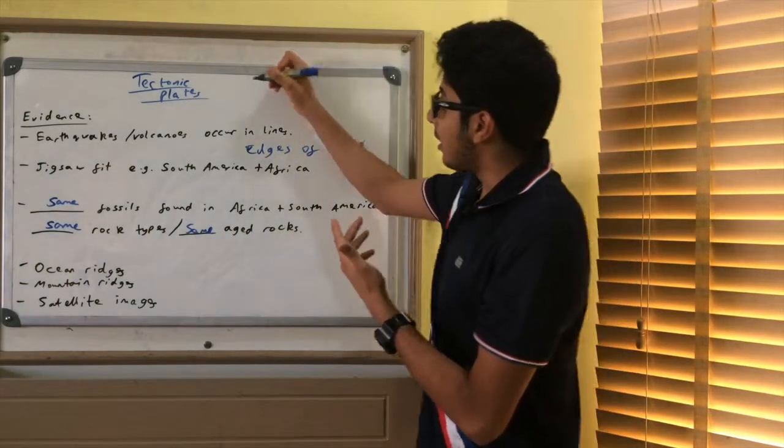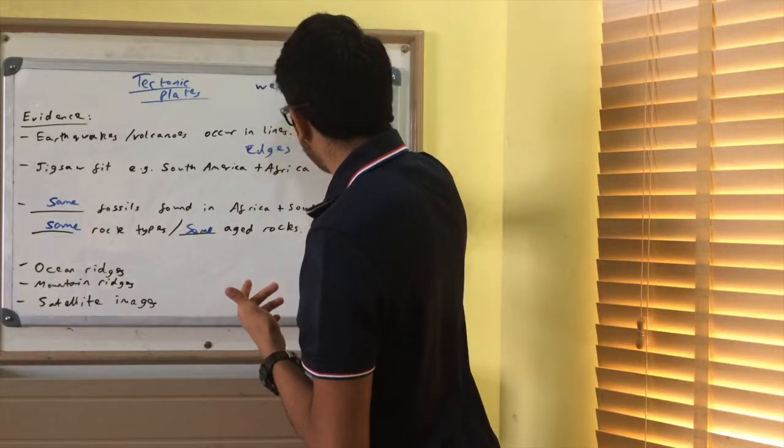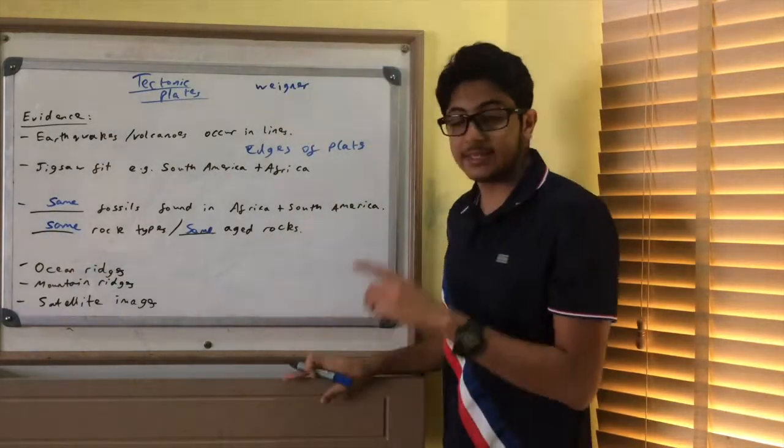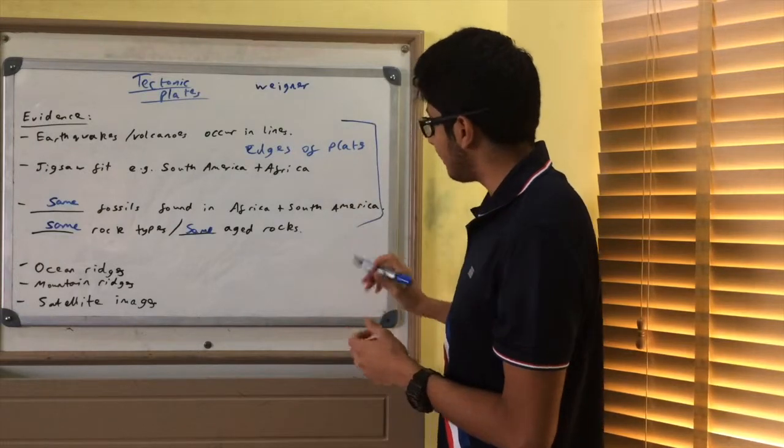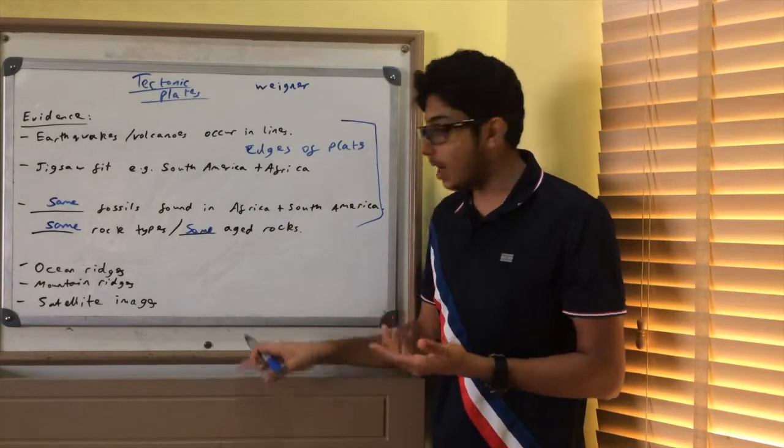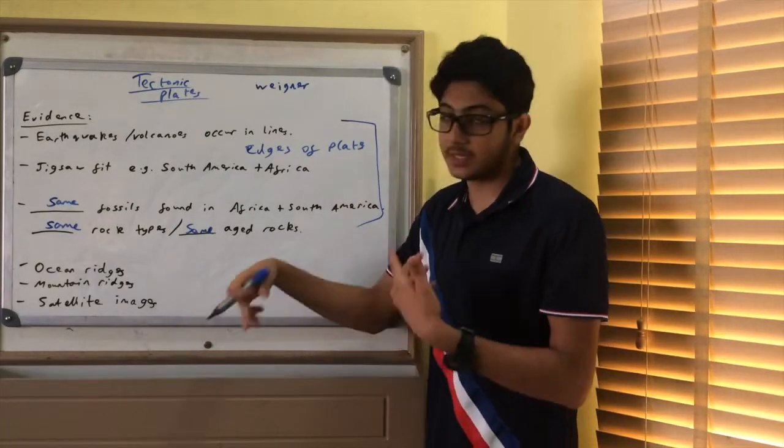And a guy called Wagner suggested plate tectonics. And he used these suggestions. And obviously you've got other evidence now, like ocean ridges, mountain ridges, and obviously satellite images.